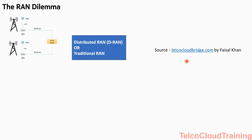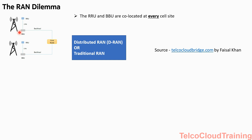This is the Distributed RAN, also called DRAN or traditional RAN. In this RAN, we have the RRU and the BBU co-located at every cell site. The RRU is basically our radio units — like the TRX, TREs, or RRH — the radio equipment basically. The BBU is the baseband unit. The RRU is the hardware and the BBU is the software card which controls the whole cell site.